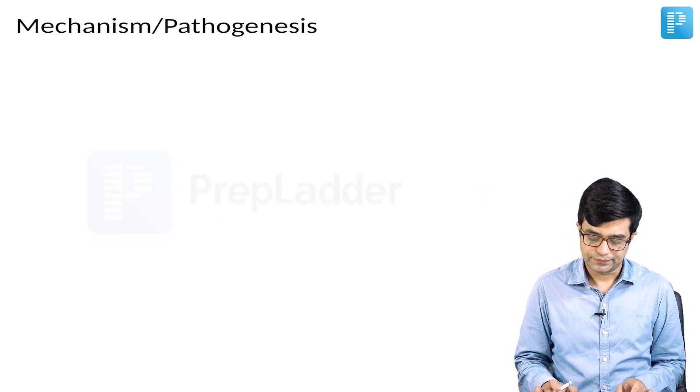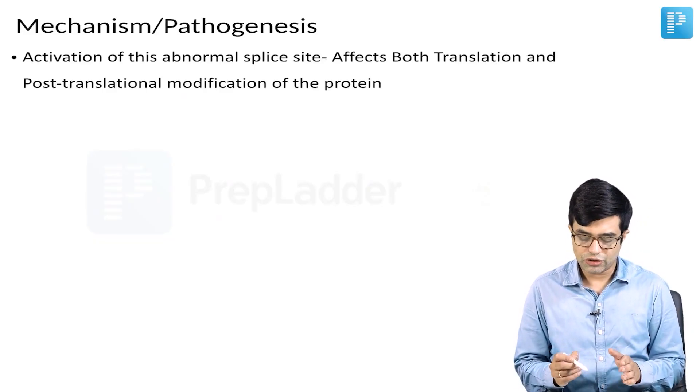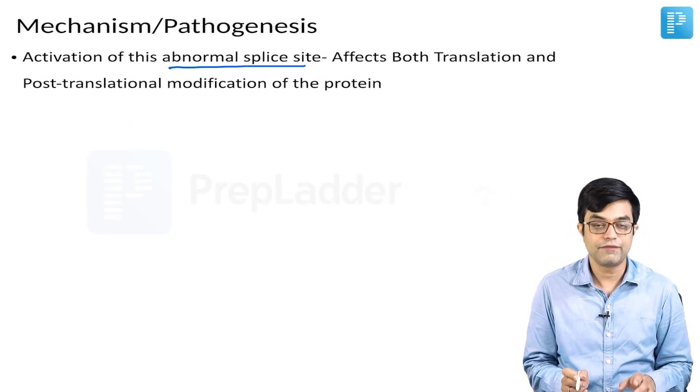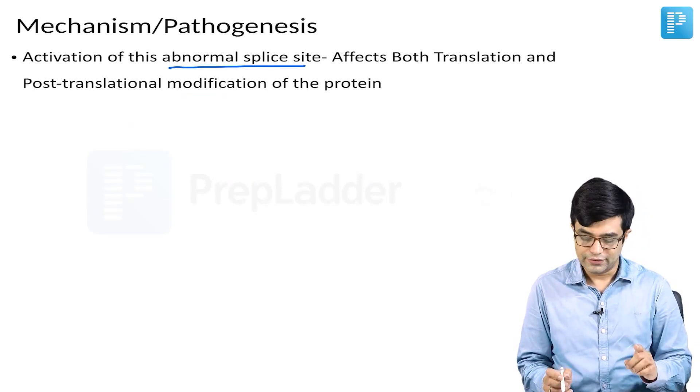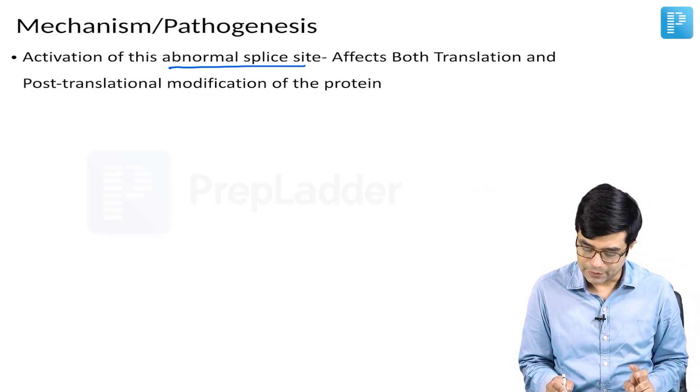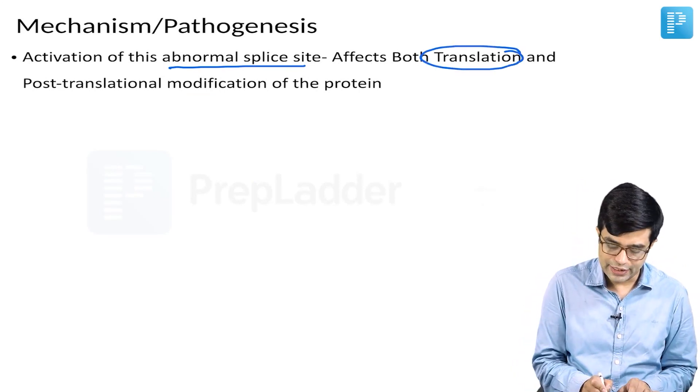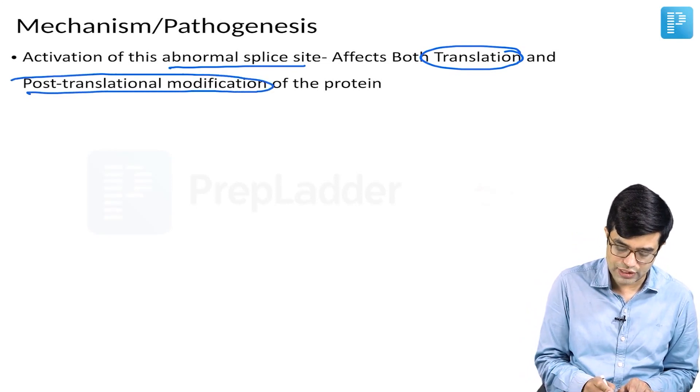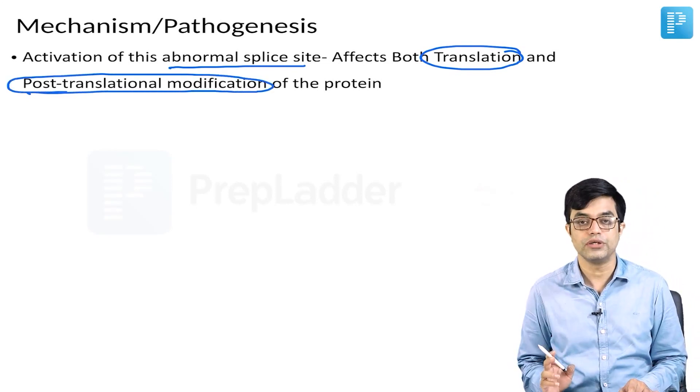Mechanism or pathogenesis. This activation of the abnormal splice site, which is normally inactive, causes two problems. It causes problems in the translation process and produces problems in the post-translational modification of the protein.